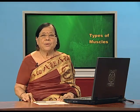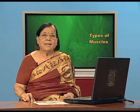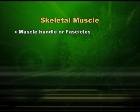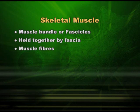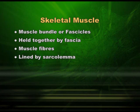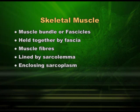Now I shall explain the structure of skeletal muscle. The skeletal muscles are present in the form of bundles, and these bundles are called fascicles. These fascicles are held together by connective tissue called fascia. Within these bundles there are muscle fibers, and muscle fibers have muscle cells. The outer membrane of the muscle cell is called sarcolemma.